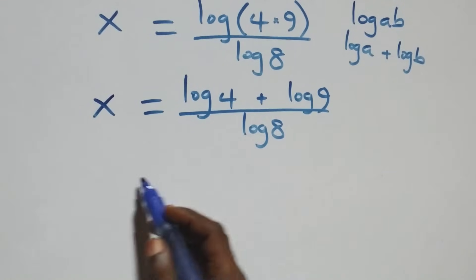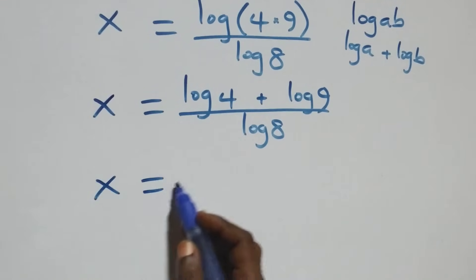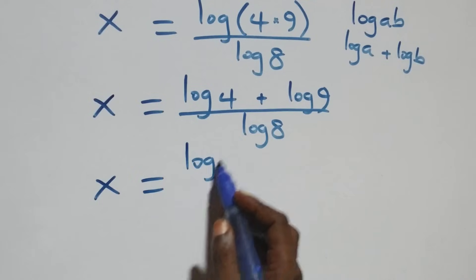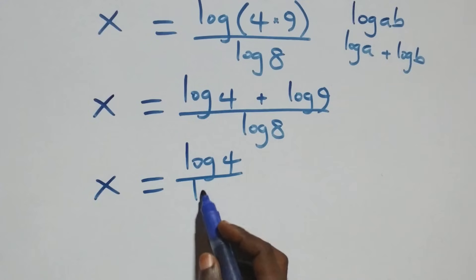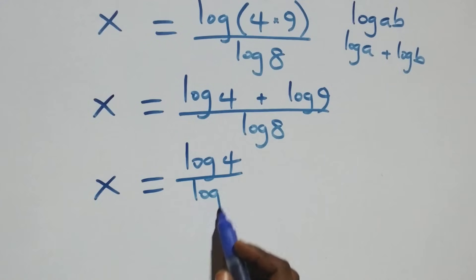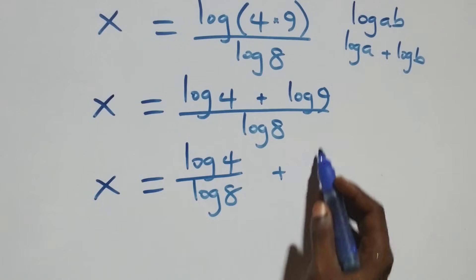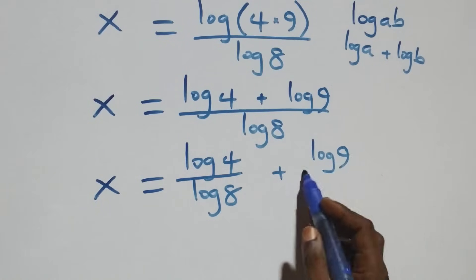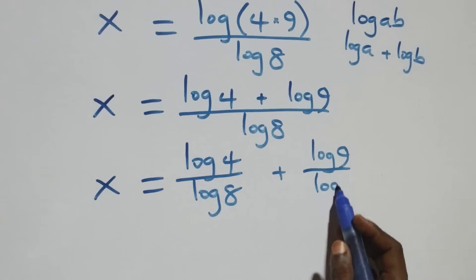From here, we separate this into two fractions, so all we have becomes x equals to log 4 over log 8 plus log 9 over log 8.